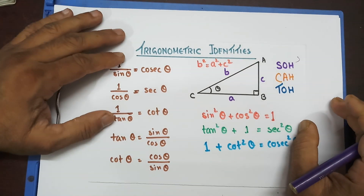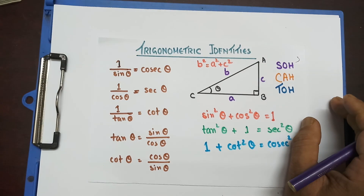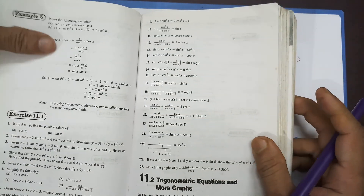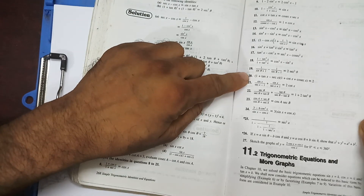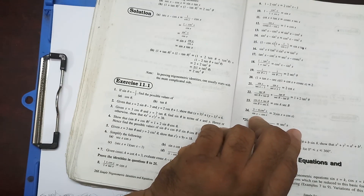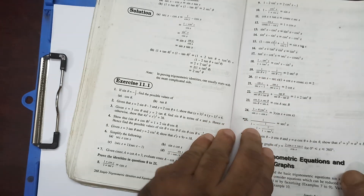Good morning, students. Welcome to the third video of trigonometric identities proving videos. I was proving some questions from New Additional Mathematics, Exercise 11.1. I have done questions 8 to 18 and I'm going to do from 19 to 25 in these videos.